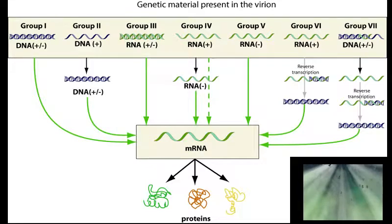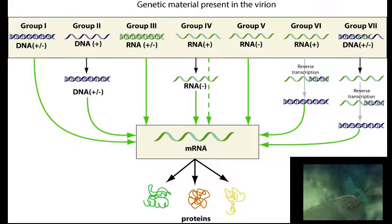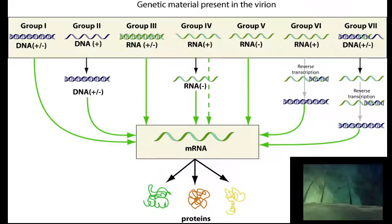Group 4: Positive-sense single-strand RNA viruses — examples include picornaviruses and togaviruses.